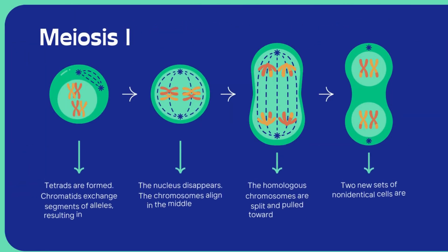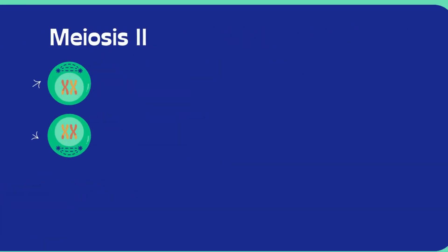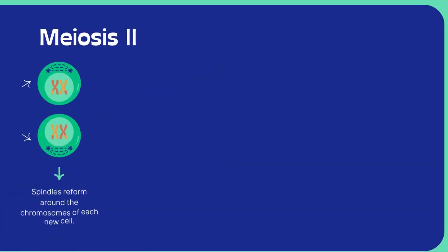Next in meiosis two, meiosis two starts after meiosis one. The non-identical cells formed in meiosis one are the basic material of meiosis two. Those two cells from meiosis one take part in meiosis two.